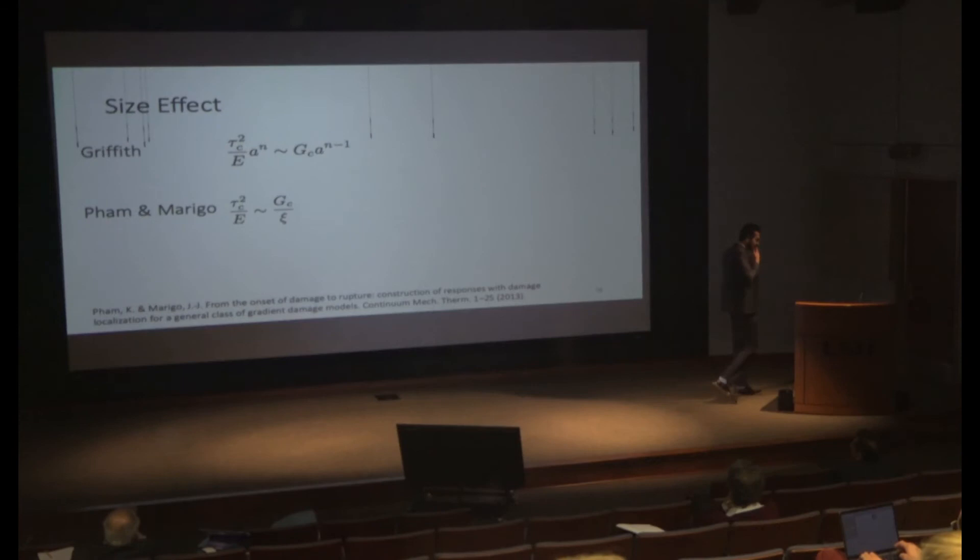Now I need one more variable, so I need to know my ℓ compared to my sample size. If I assume that ℓ doesn't change with my sample size—if the process zone is the same in all the samples—then it shouldn't matter if my silicon is a kilometer in radius or 100 nanometers.